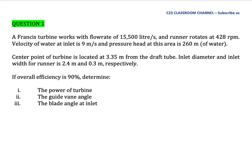Francis Turbine Tutorial Question No.1: A Francis Turbine works with flow rate of 15,500 liters per second and runner rotates at 428 rpm. Velocity of water at inlet is 9 meters per second and pressure head at this area is 260 meters of water. Center point of turbine is located at 3.35 meters from the draft tube.